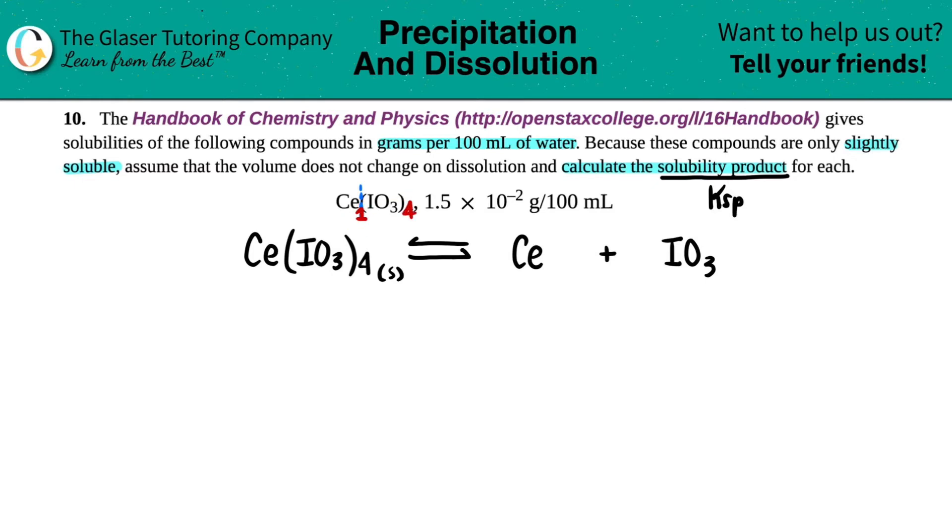So use those charges. This one crisscrosses up, telling me that the iodate was a negative one. And this four crisscrosses up, telling me that the Ce was a plus four. An iodate is always a negative one charge. So these charges are correct. Ce is plus four, and the iodate is negative one.